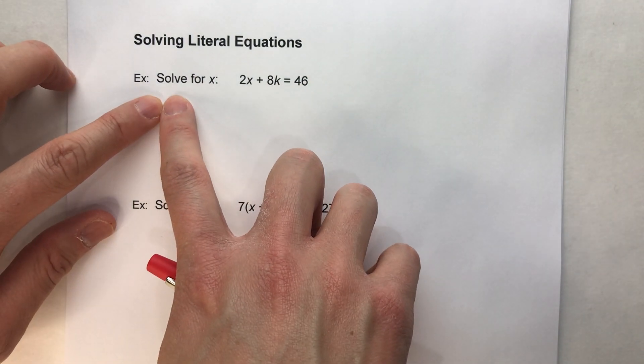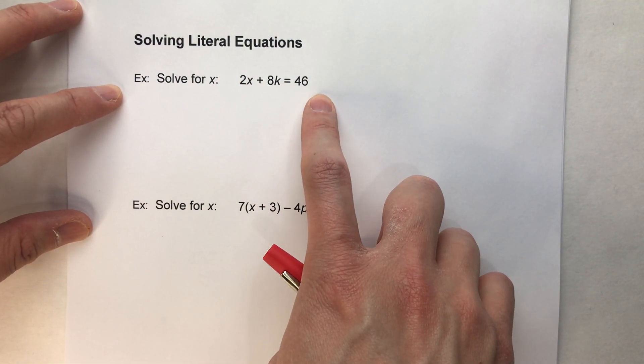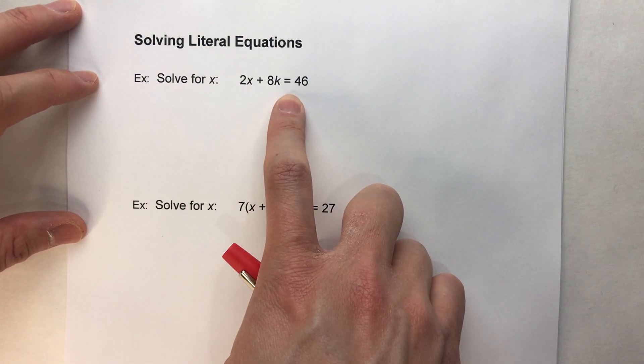So when we solve for x, for example, in this equation 2x plus 8k equals 46, we're not going to be able to figure out what exact value x is because there's a second variable in it.